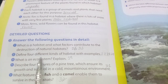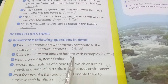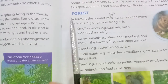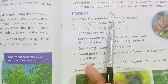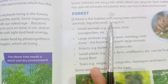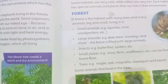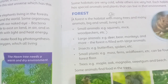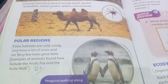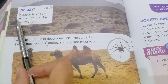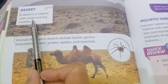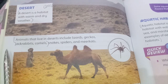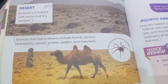Question two: define four different kinds of habitat with examples. First, forest — a forest is a habitat with many trees and many animals, big and small, living in it. Small animals include squirrels, mice, woodpeckers, etc. Next is desert — a desert is a habitat with warm and dry weather. Animals that live in the desert include lizards, jackals, jackrabbits, and camels.